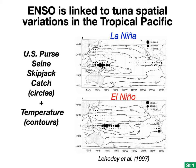The consequences of ENSO are most strongly felt in the tropical Pacific because it's centered there, and the tuna there are definitely affected by it. It's been shown that tuna catches vary greatly between different phases of ENSO, as seen in maps of tuna catch during La Niña versus El Niño phases overlaid with sea surface temperature contours. Past work looked at how temperature variations might affect tuna catch changes associated with ENSO, but these changes can also be driven by variations in oxygen availability, which hasn't been studied.